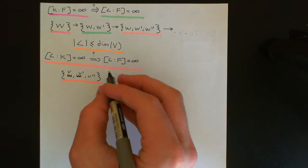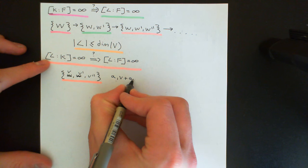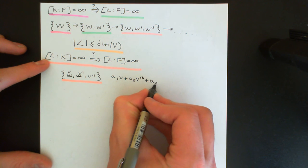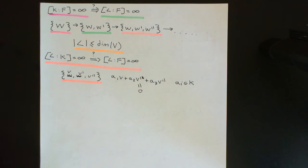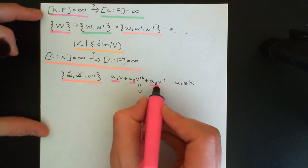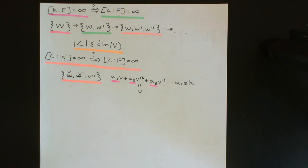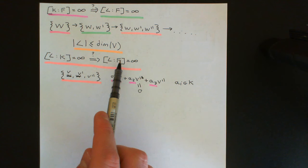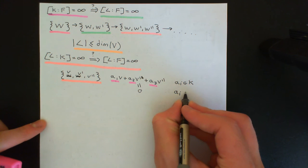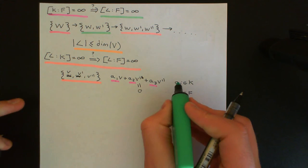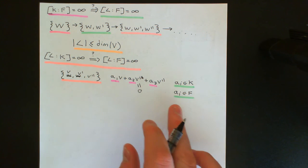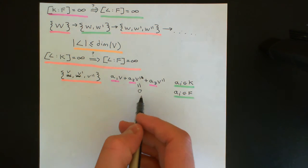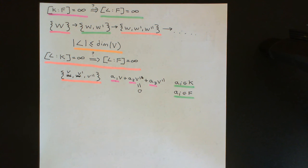That means the only linear combination A1·V + A2·V' + A3·V'' with coefficients A1, A2, A3 from the field K that gives the zero vector is the trivial one where all are zero. When we move to thinking about L as a vector space over F, we reduce the field — restricting coefficients to the subfield F rather than the entire field K. So it's certainly still true that the only linear combination with coefficients from F giving zero is the trivial one.